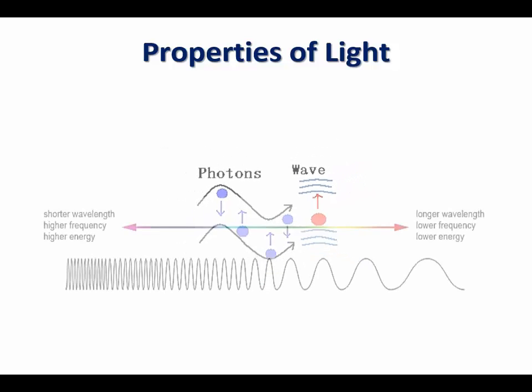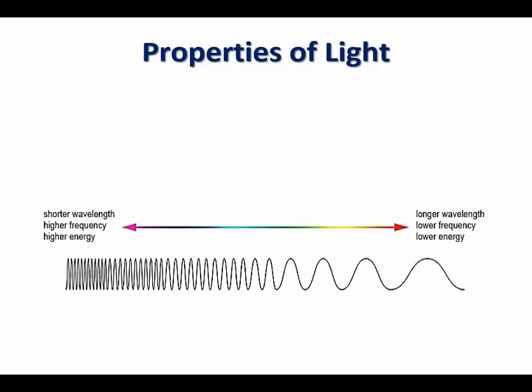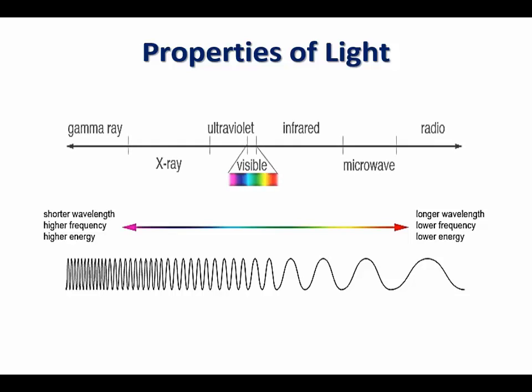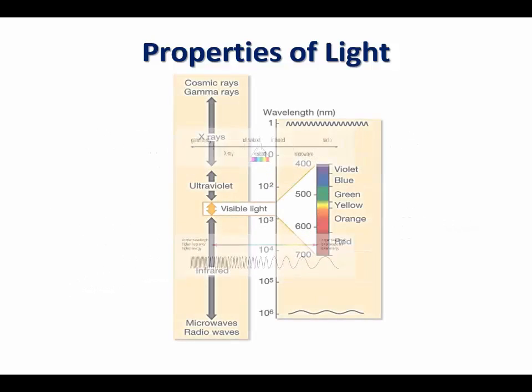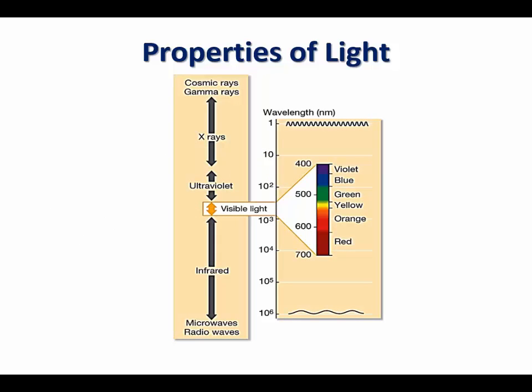The amount of energy in light is inversely proportional to its wavelength. The longer the wavelength, the lower the amount of energy of light, and vice versa. Electromagnetic waves that are detectable by the human eye are known as the visible light or visible spectrum, and it consists of light of wavelengths between 400 and 700 nanometers.